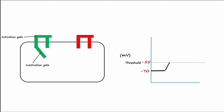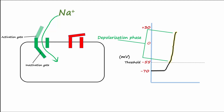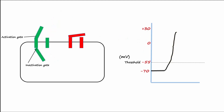When we get to threshold, the activation gate on the sodium channel opens and the potassium voltage gate starts to open, but opens slowly. Fully open sodium channels will allow much more sodium to enter the cell compared to the amount of potassium that is allowed to leave. The positively charged sodium ions entering the cell will make the membrane potential more positive. This phase on the action potential graph is called the depolarization phase.